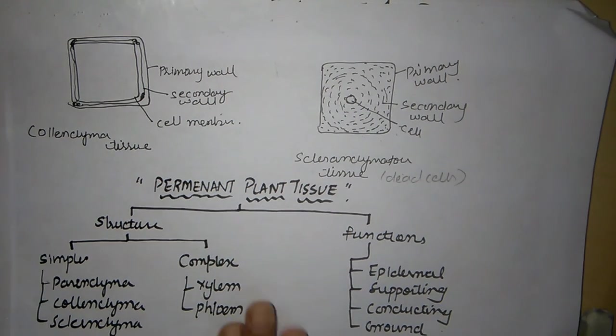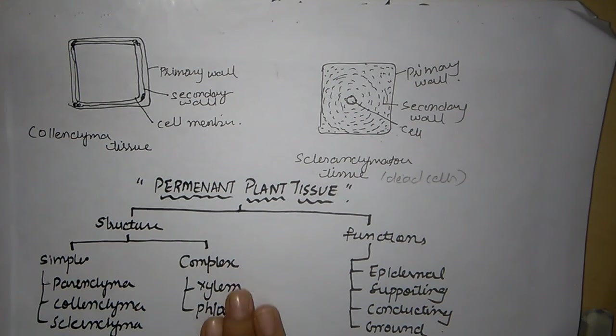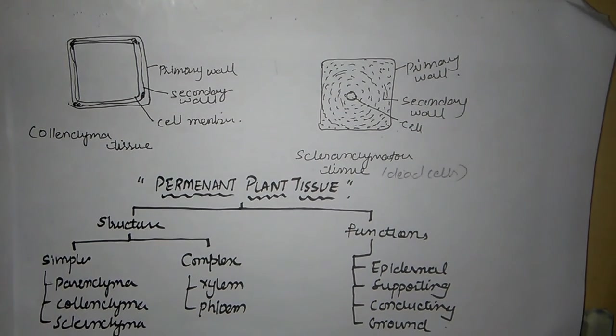Now we are going to discuss xylem and phloem. Xylem is divided into four different parts.